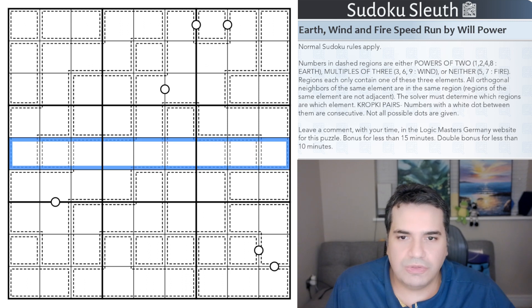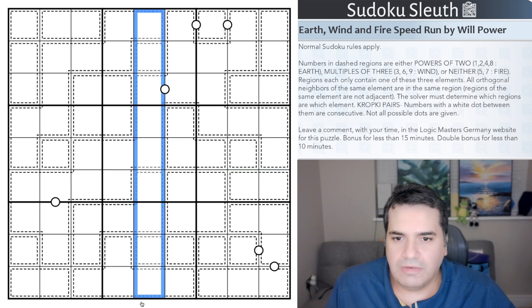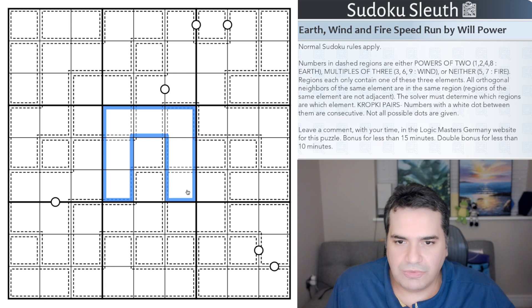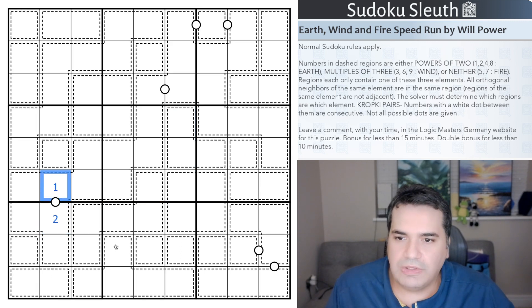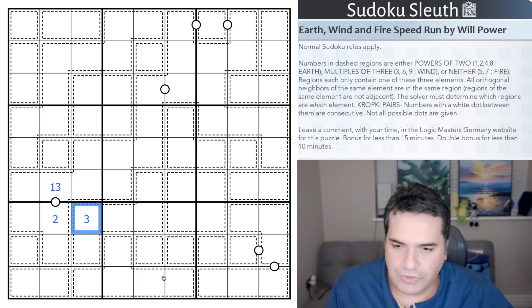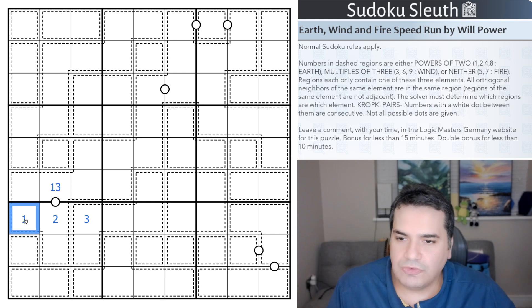Normal Sudoku rules apply. That means place digits one to nine once each in every row, column, and in every three by three box. Then there are the kropki dot rules or the consecutive rules. It does explicitly say not all possible dots are given. If you have a white dot, the cells must be consecutive.